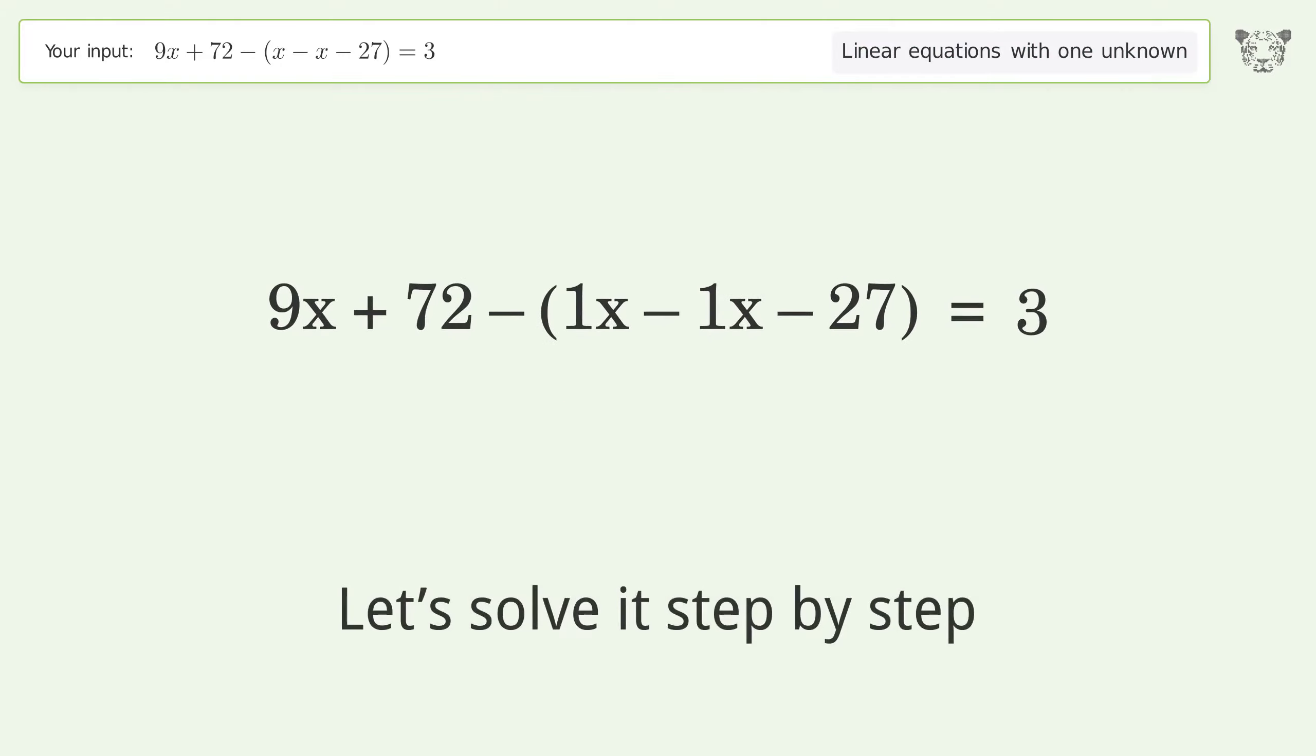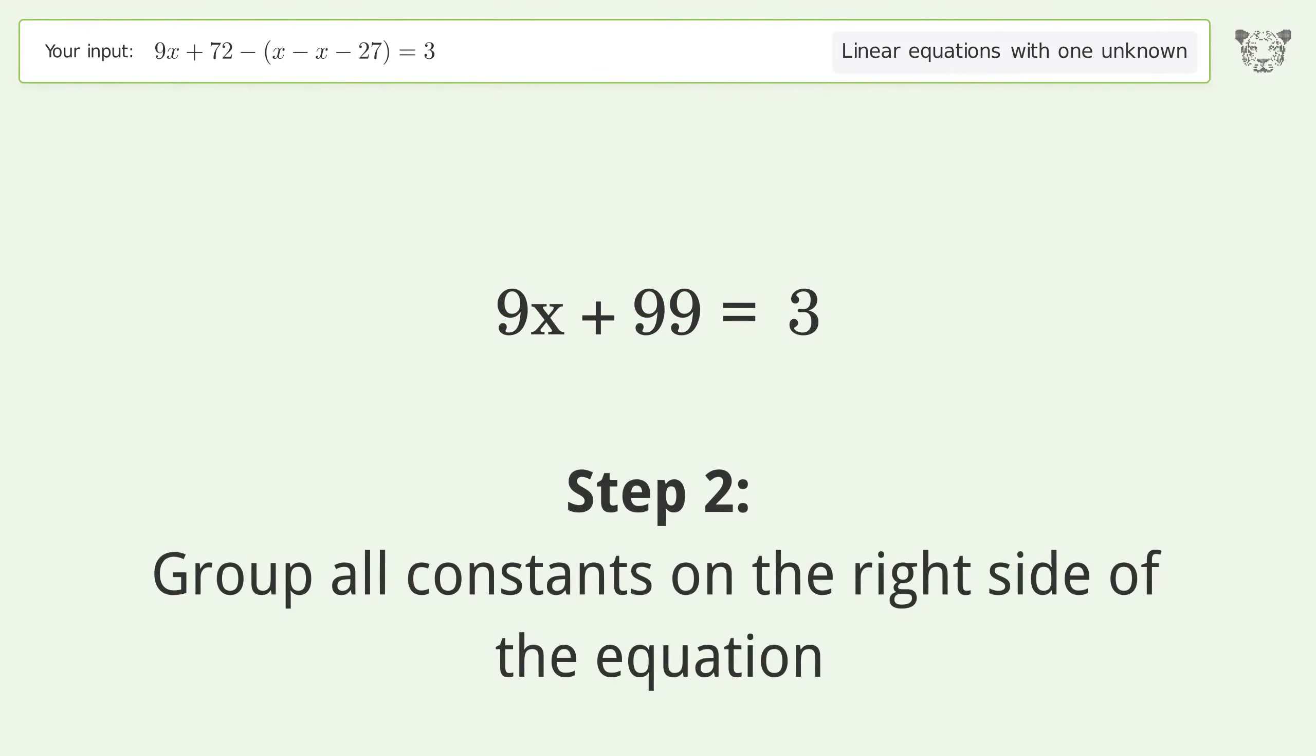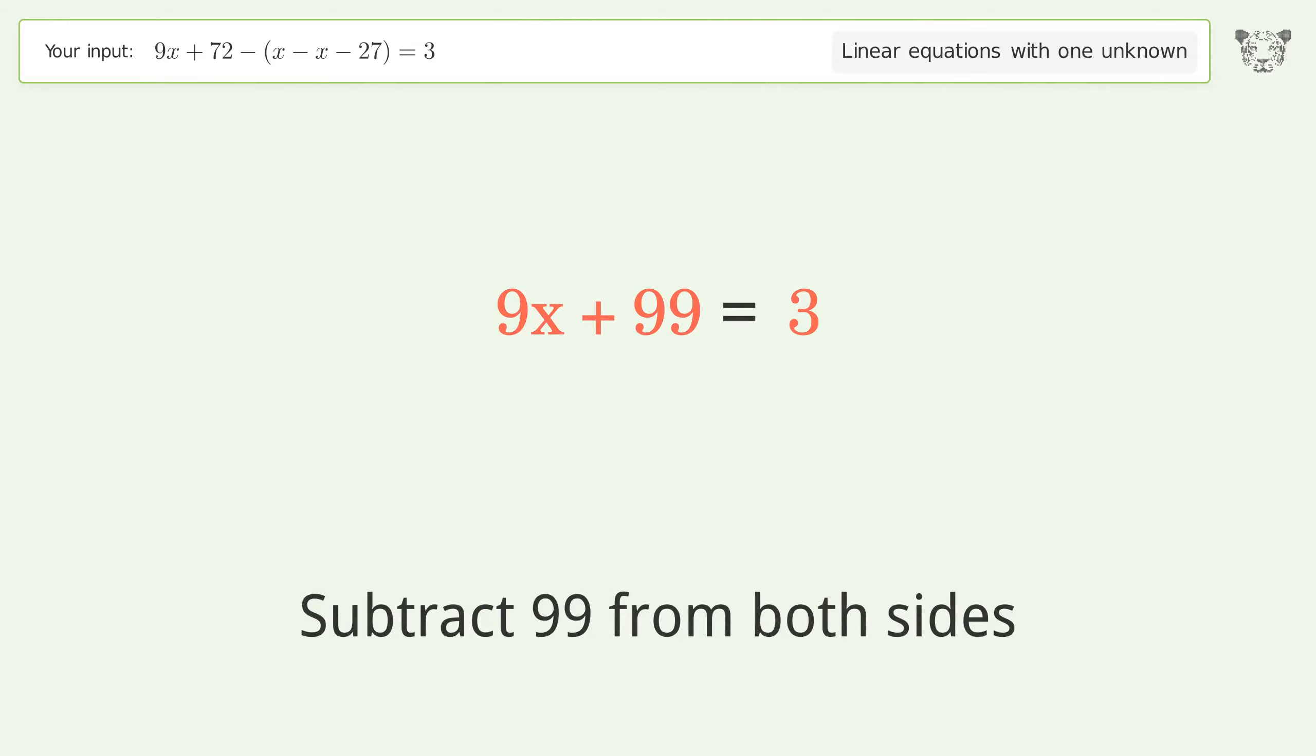Let's solve it step by step. Simplify the expression. Simplify the arithmetic. Group all constants on the right side of the equation. Subtract 99 from both sides.